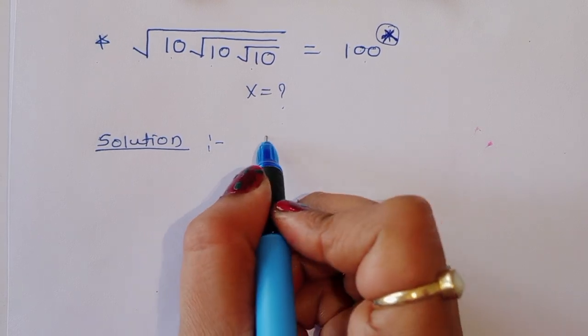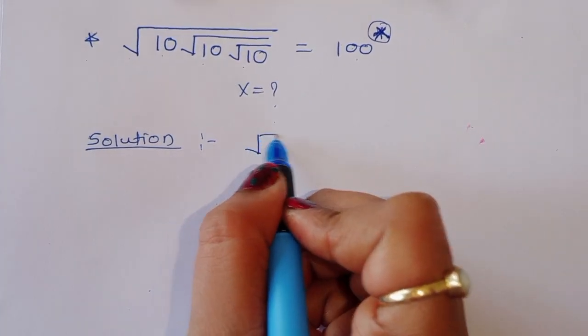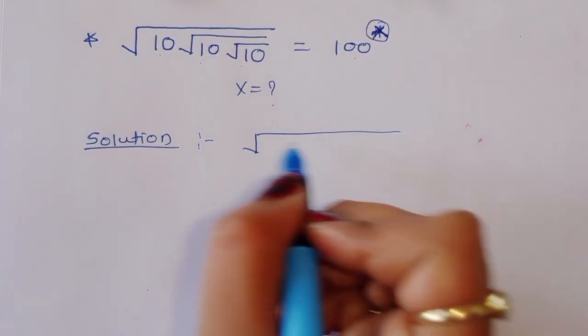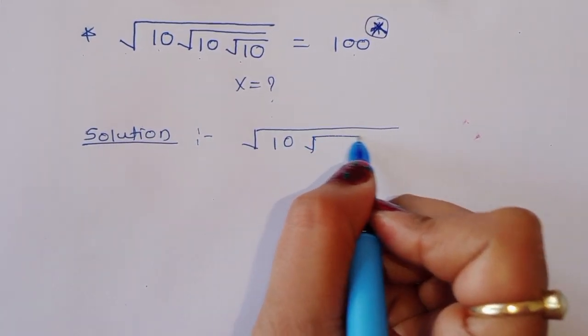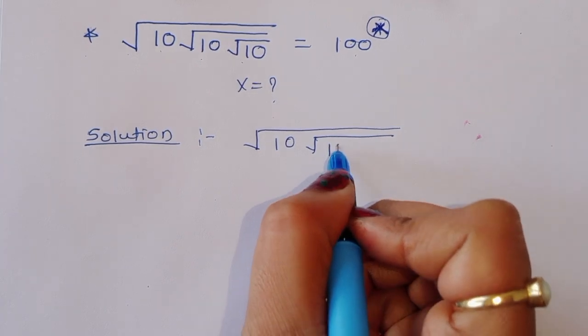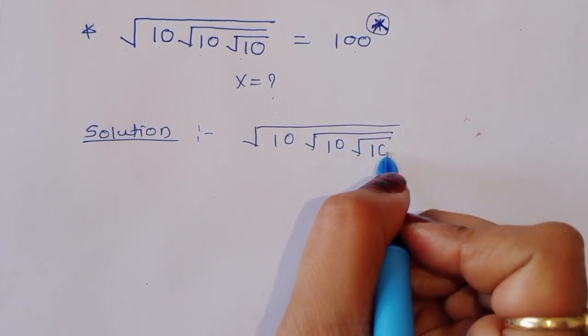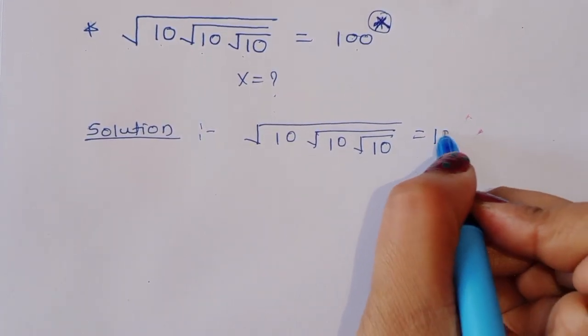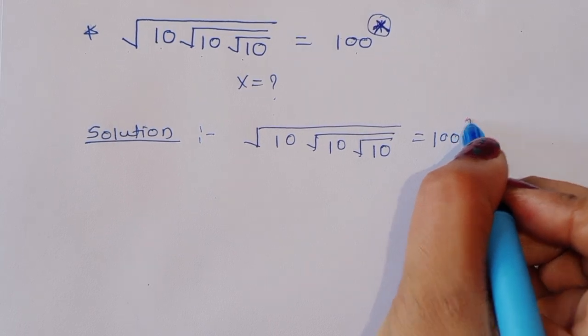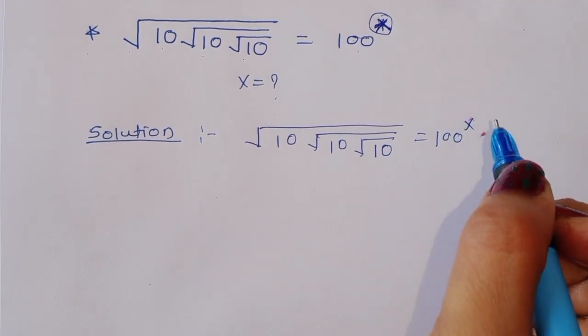Let's see the solution. What is given here? Square root of square root of square root of 10 is equal to 100 raised to x.